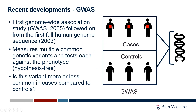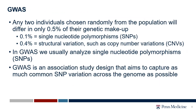The first GWAS followed on from the first whole genome sequence. The idea is that you have a set of cases for your phenotype and a set of controls, and you ask, across the entire genome, is this variant more or less common in cases compared to controls? Any two individuals chosen randomly from the population differ in only about 0.5% of their genetic makeup, and only about 0.1% of that consists of single nucleotide polymorphisms — SNPs — which are single base-pair changes. SNPs are what we normally study in GWAS.